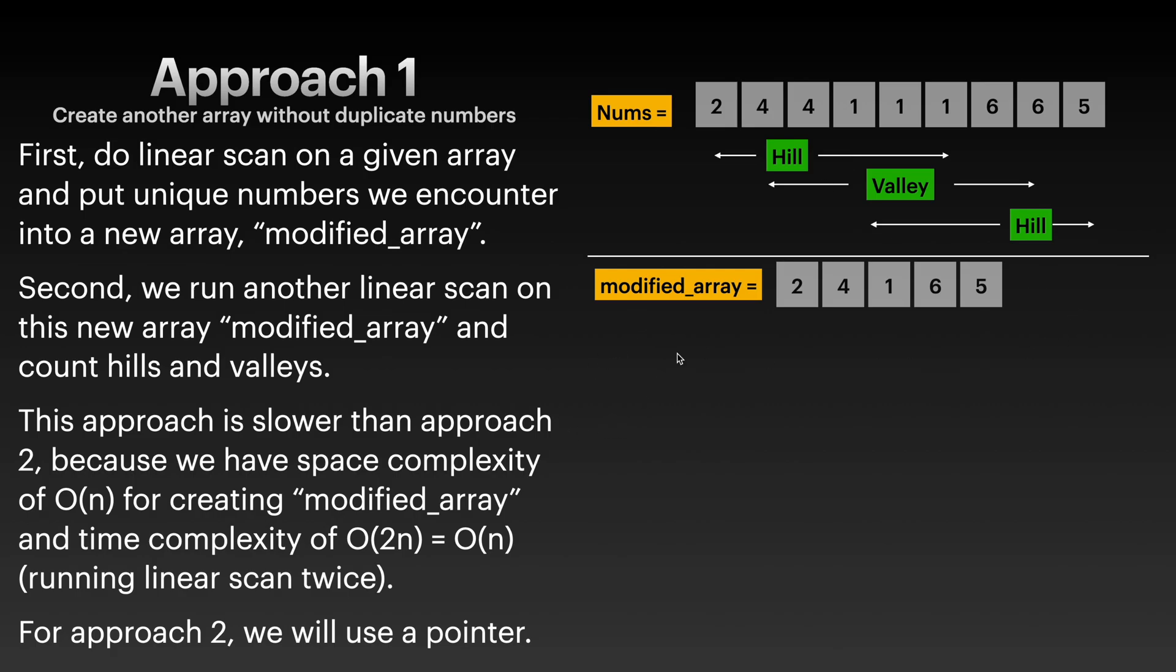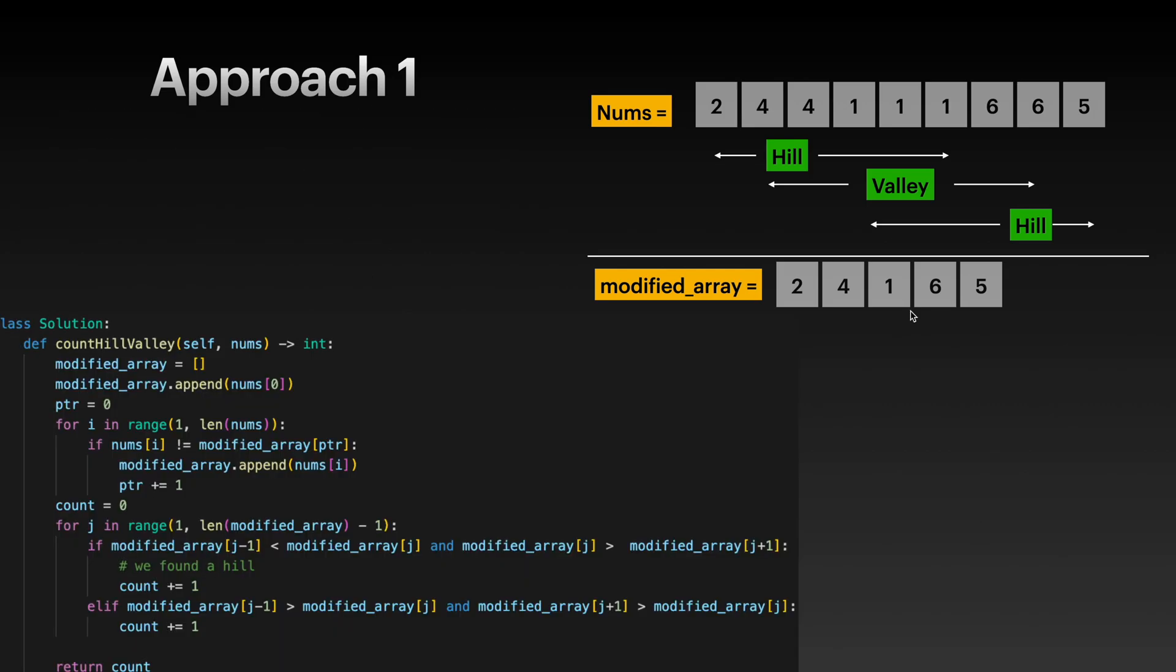Worst case scenario will be nums will have all distinct numbers, then this approach here is not really efficient. But Approach 1 is very simple. I think this is the code for Approach 1 - we have two for loops. The first for loop is where we are constructing this modified_array. One thing to keep in mind is that i starts from one, and then we're comparing nums[i] to modified_array at pointer location, pointer index.